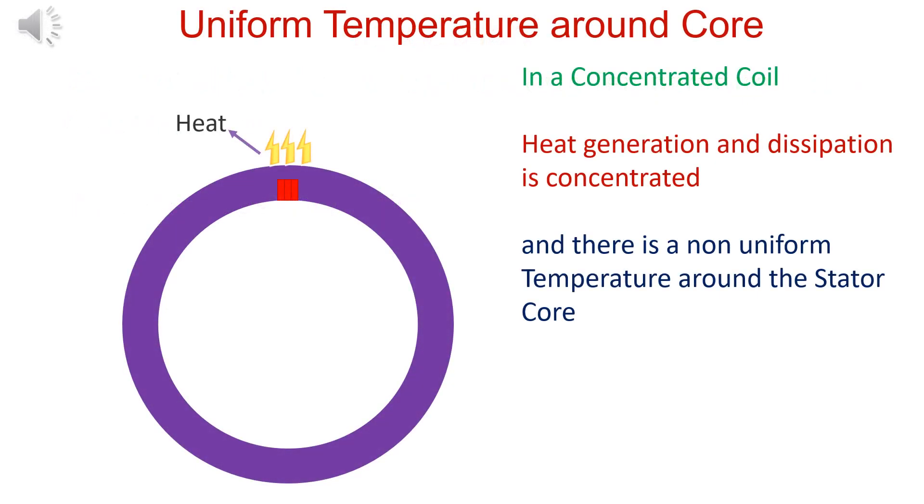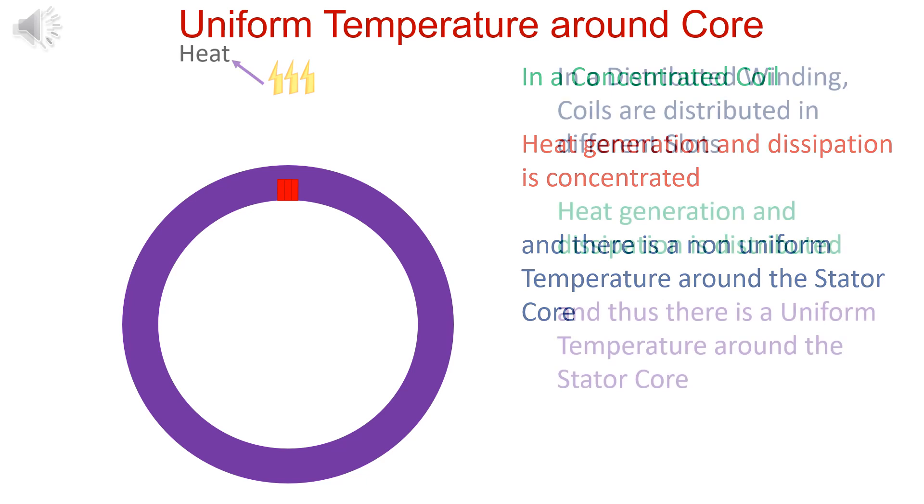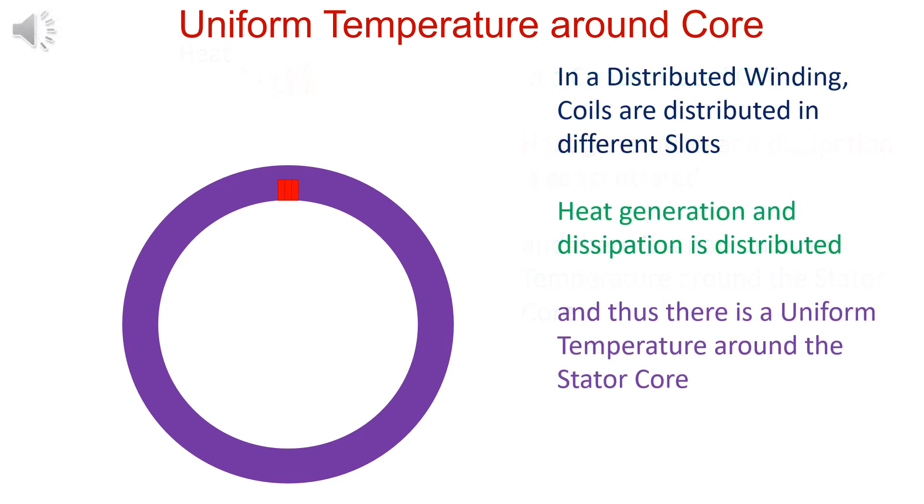In a concentrated winding, generation of heat is concentrated. This leads to non-uniform temperature around the stator core and thus the stator core is not fully utilized. In a distributed winding, heat generation is distributed and temperature is uniform around the core.